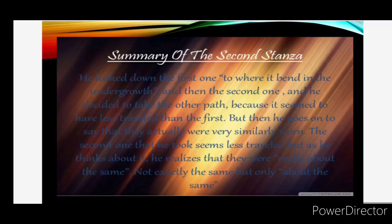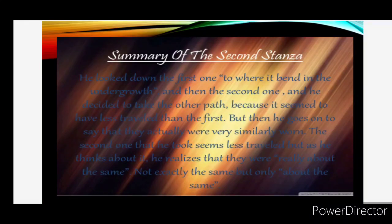He looked down the first road to where it bent in the undergrowth, and then the second one. He decided to take the other path because it seemed to have less travel than the first. But then he goes on to say that they actually were very similarly worn. The second one that he took seems less travelled, but as he thinks about it, he realises that they were really about the same — not exactly the same, but only about the same. So he was not able to decide, which is why he stood there for a longer period of time.